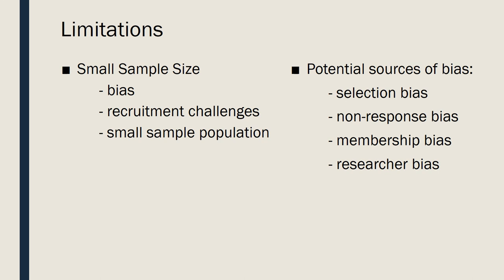There are also limitations. The greatest limitation was the small sample size, due in part to the small sample population, challenges in recruitment, and different types of bias. Selection bias was possible due to the small sample population and recruitment challenges. Non-response bias may have occurred due to fear of revealing undisclosed disabilities. Similarly, membership bias may have prevented participation of medical students with disabilities, as they are a stigmatized minority in medicine. Additionally, there was potential for researcher bias, as the student researcher was an outsider from the sample population and an able-bodied individual.